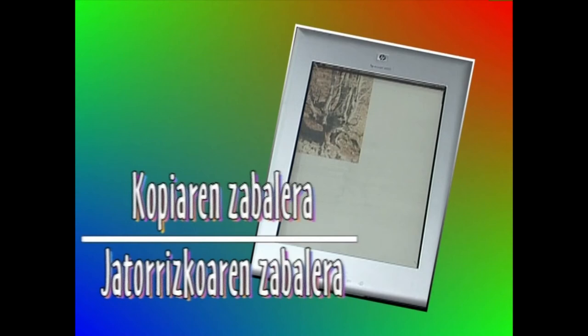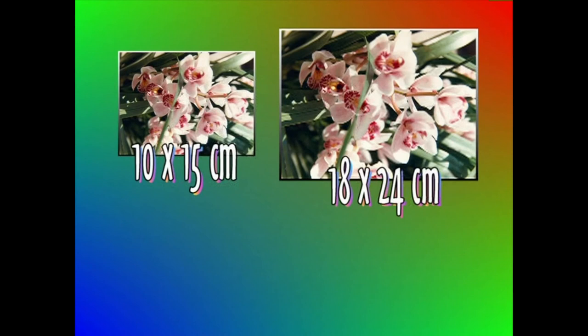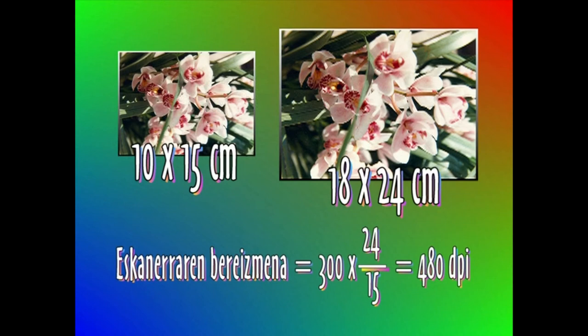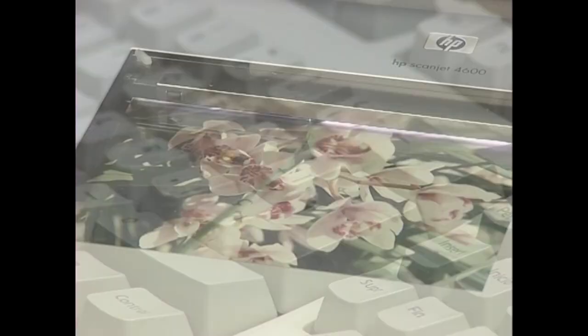Esaterako, hamar bider hamabost zentimetroko irudia, hemezortzi bider hogeita lau zentimetroko bilakatu nahi badugu, esan beharrik ez dago haunditzea buru zabiltzala. Beraz, inprimagailuaren baino bereizmena handiagoa eskatu beharko diogu eskanerrari. Bestela, irudi digitalizatua kalitate eskasa izango du. Formula aplikatu eta lortutako emaitza laurehun eta laurogei da. Beraz, eskanerrari horri aldeko, laurehun eta laurogei puntu egiteko agindu behar diogu. Horrela eginda eta gainerako aginduak emanda gero, irudia digitalizatzeko moduan izango gara.